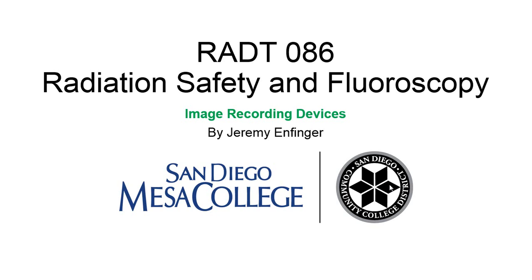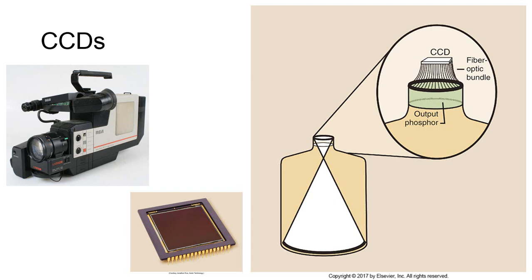Before the light image coming from the image intensifier is processed for the display system, it's always transmitted through a bundle of optic fibers directly to a CCD or CMOS camera. The CCD, or charge-coupled device, was introduced in the 1980s, and the technology allowed for the creation and marketing of home camcorders as it replaced the TV camera tube. The CCD is a small, flat plate approximately 1 cm in length and breadth for a home camcorder. The type used in fluoroscopy are about 2.5 cm, coupled to the 2.5 cm output phosphor.